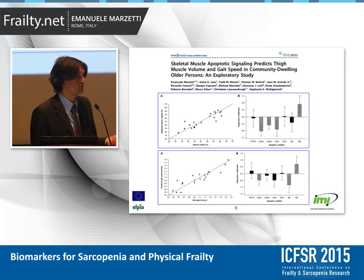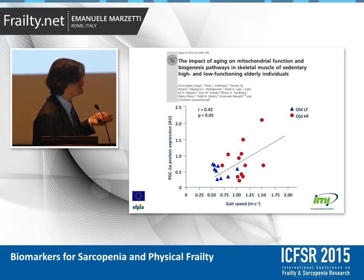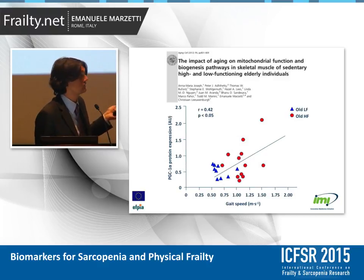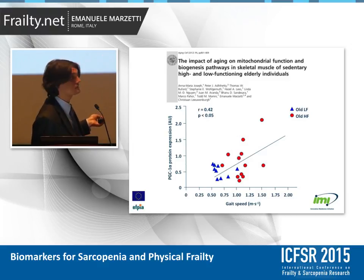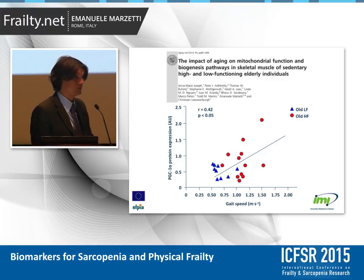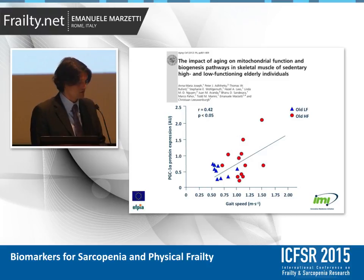This is another study from our group, where we showed that gait speed and the protein expression of PGC-1-alpha — the master regulator of mitochondrial biogenesis — are correlated. The higher the expression of PGC-1-alpha, the faster the gait speed. Mitochondrial biogenesis may be really crucial for the maintenance of muscle health in old age. But this assay requires a muscle biopsy, which is not obviously feasible in clinical practice.